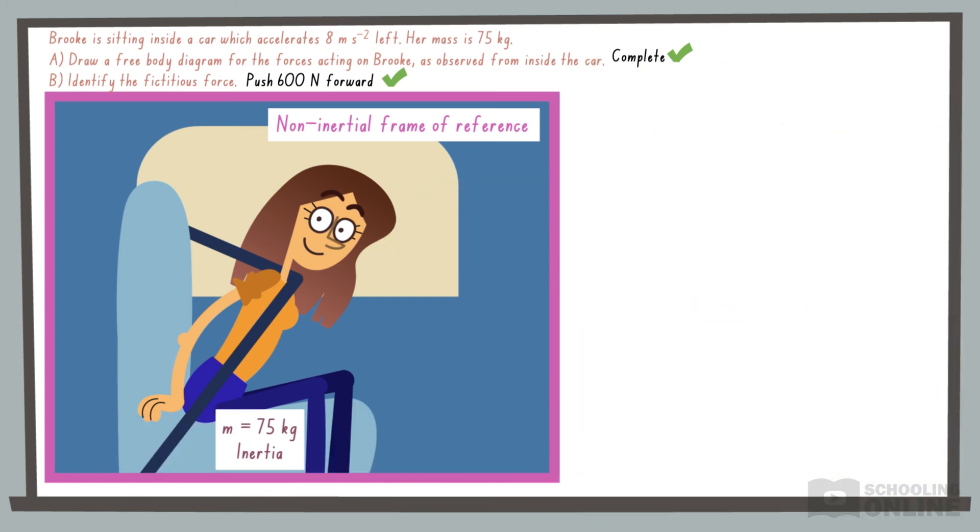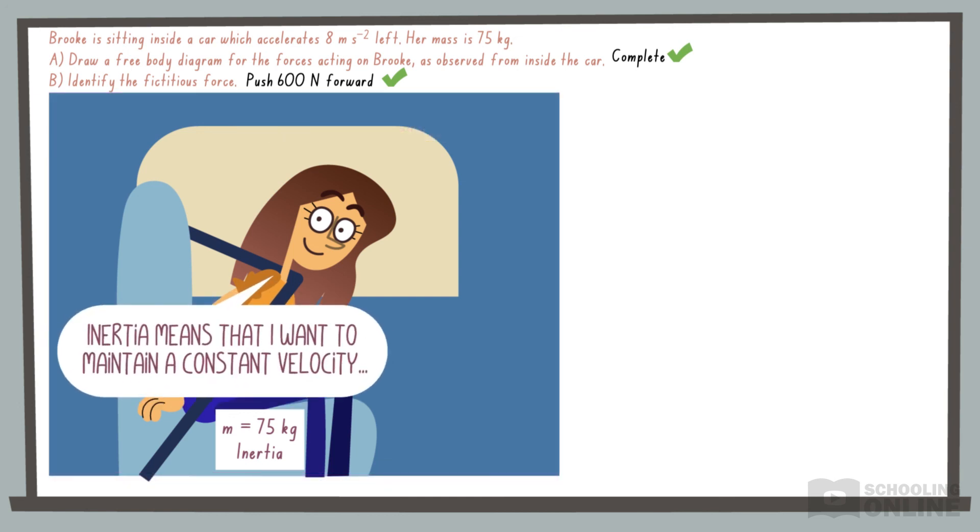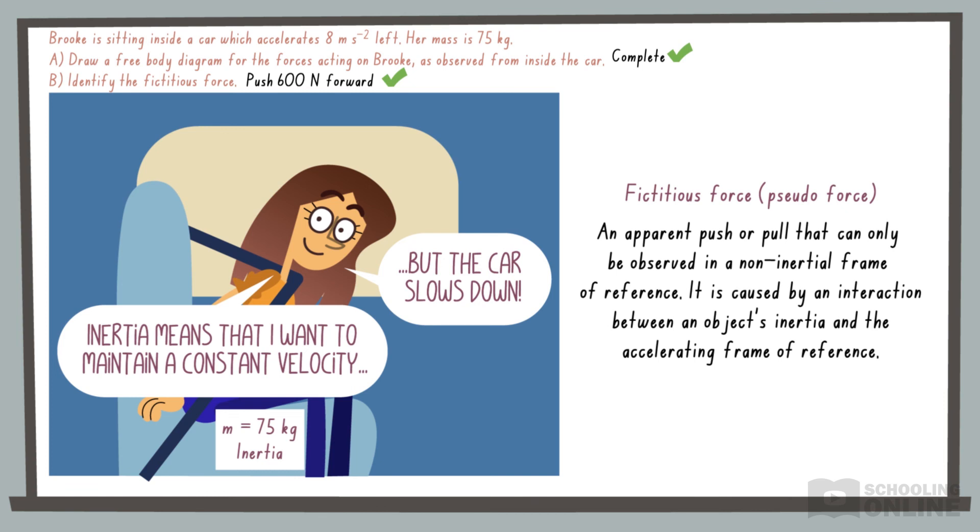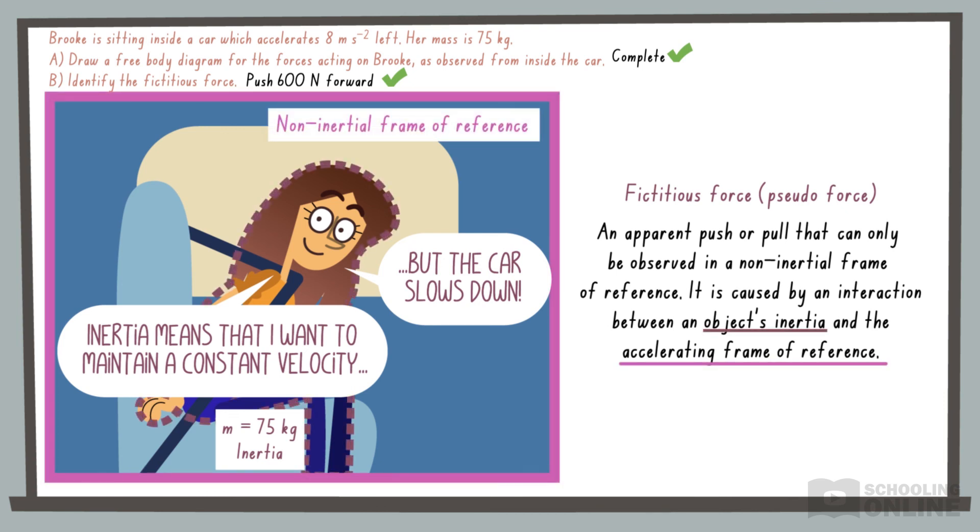But why does she feel this fictitious force? Brooke has mass and inertia, so her body wants to maintain a constant velocity of 15 metres per second forward. This contradicts the motion of the car, which slows down. Therefore, she appears to be pushed forward, because her inertia interacts with the accelerating frame of reference.